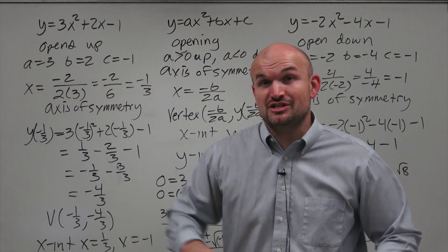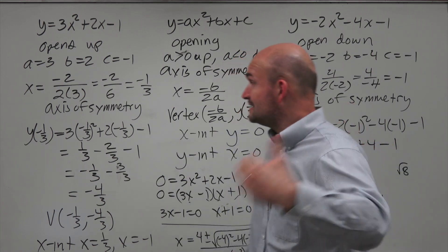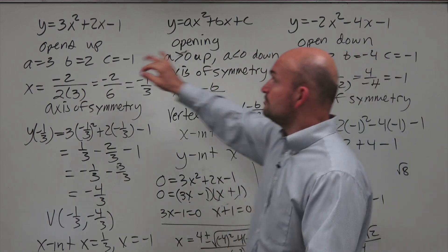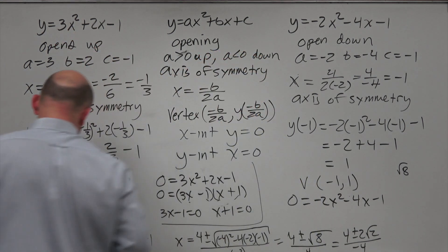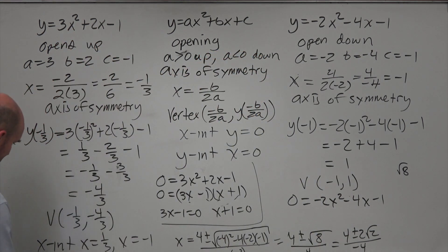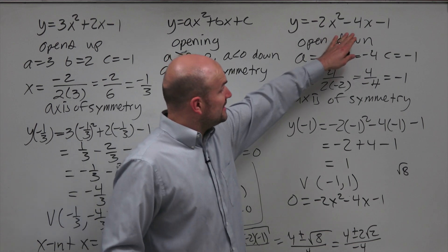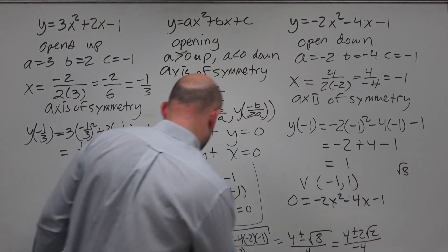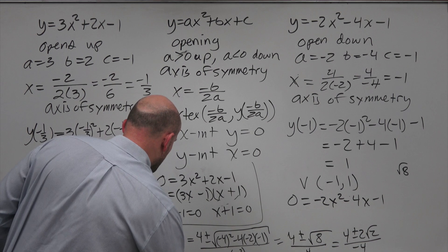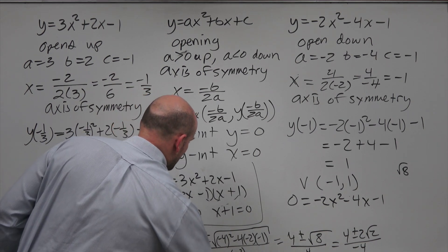Thankfully, the y-intercepts are relatively simple. If you plug 0 in for x in the first equation, you just get y equals negative 1. And if you plug 0 in for x in the second equation, you also get y equals negative 1. So both y-intercepts are y equals negative 1.